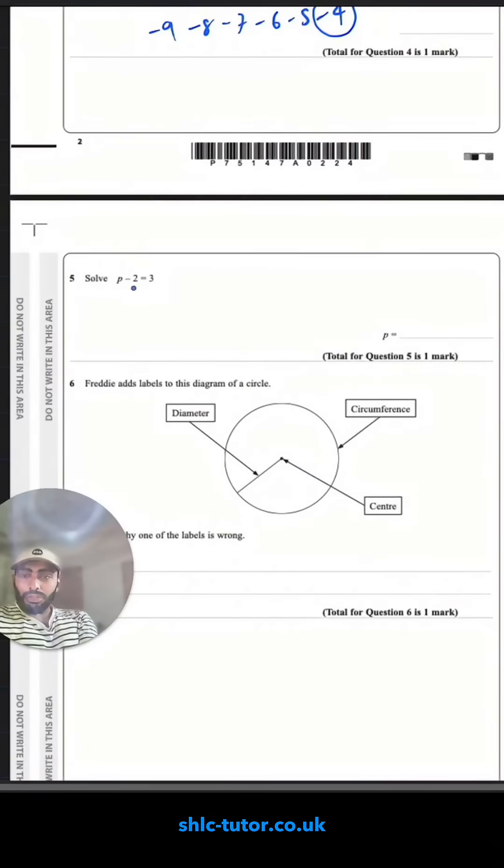Solve p take away two is equal to three. Right now I'm taking away two from the p so I need to add two to both sides. So p is equal to five.